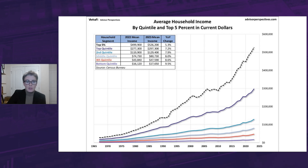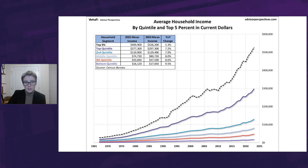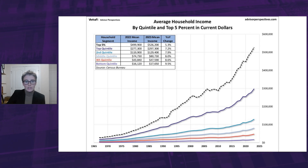Most people think in nominal terms, so our first chart illustrates the current dollar values for the six cohorts since 1967 — in other words, the value of a dollar at the time received, not adjusted for inflation. During 2023, the median average household income rose 8% to $80,730. Additionally, we can see that all the other groups showed year-over-year increases from 2022 in their average household income, again in current dollars.